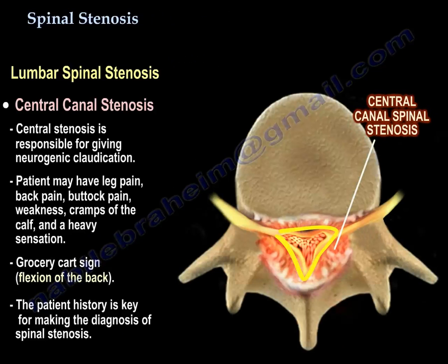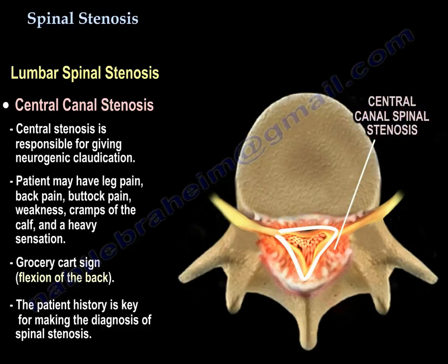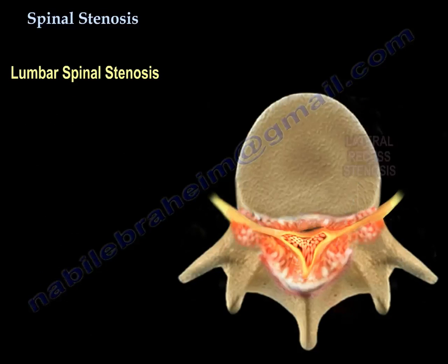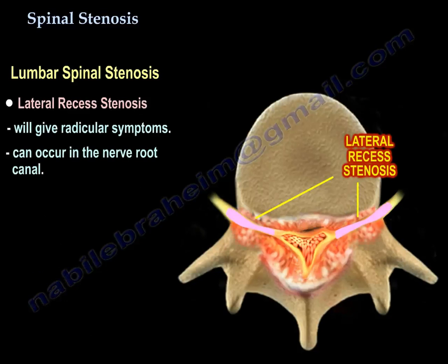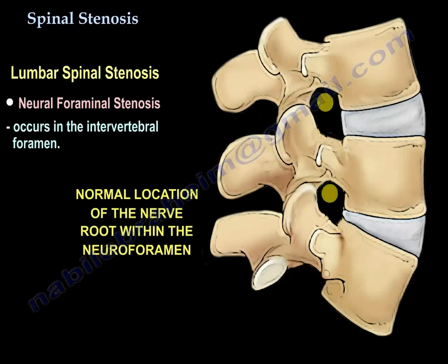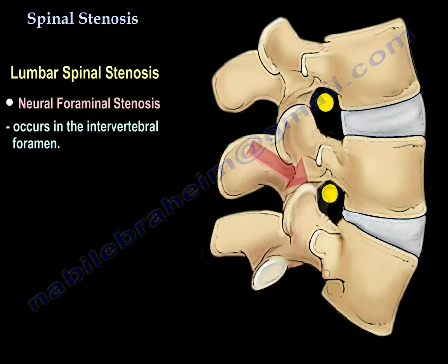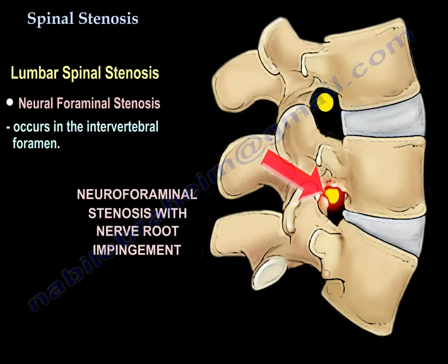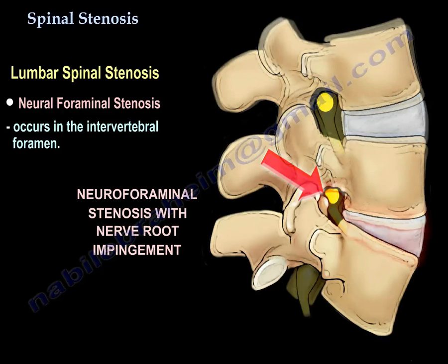The grocery cart sign with flexion of the back is key. History is the key for making the diagnosis of spinal stenosis. The lateral recess will give radicular symptoms. It can occur in the nerve root canal — that is lateral recess stenosis — or in the intervertebral foramen, which is neuroforaminal stenosis.